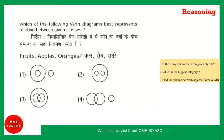Coming to the next question - tell the Venn diagram for fruit, apples and oranges. This type of question has come in the DRD exam. Is there any relation between given objects? Yes, all are a certain kind of fruit. Fruit is the biggest category. All apples are fruits, all oranges are also fruits, and no apple can be an orange. So this is apples and these are oranges. Option 2 is the correct answer.